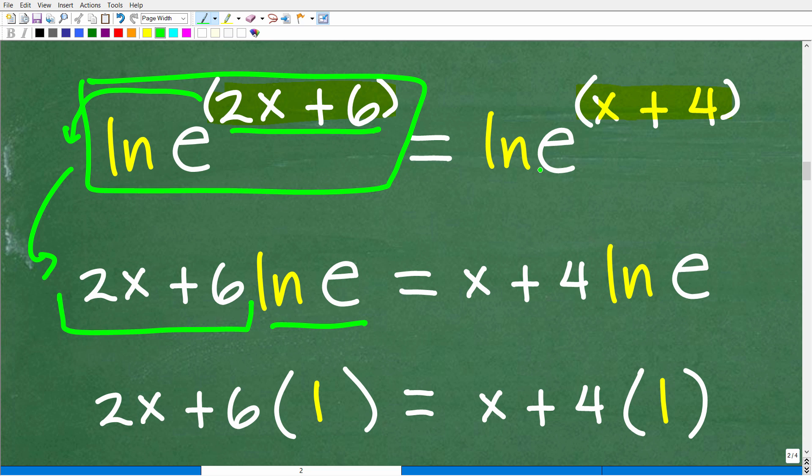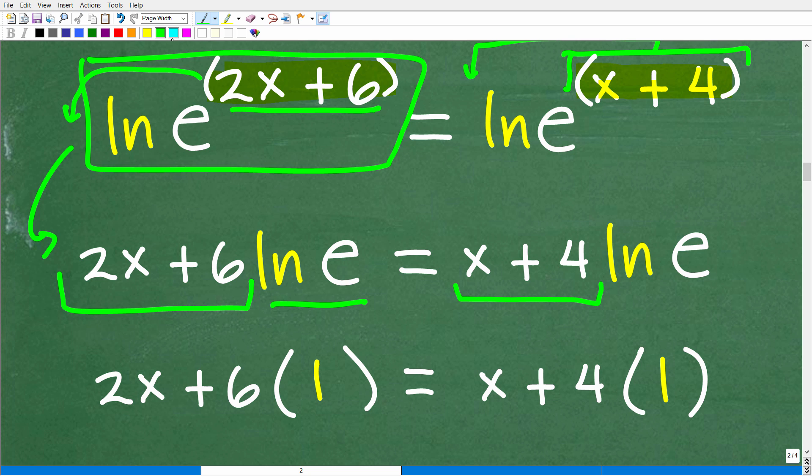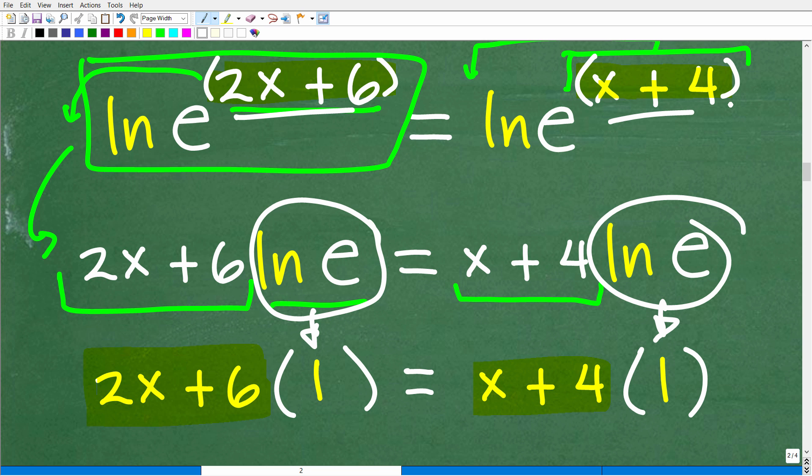So we can drop the exponent down right in front of the actual log. And this is going to be the key to solving this problem. So once again, we're going to take the LN of both sides. And when we do that, we can take these exponent expressions and put it in front of the LN E. So we have 2x plus 6 LN E and x plus 4 LN E. And here is where this problem is going to get super easy because if you know a thing or two about logarithms and natural logarithms, you know that the LN of E is equal to 1. And that's why I indicated you could do this problem without the aid of a calculator.